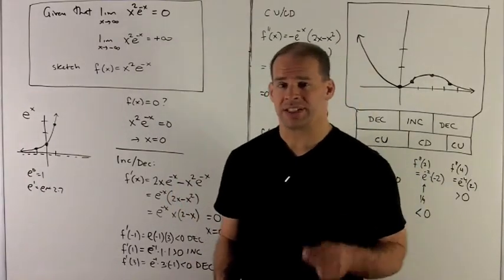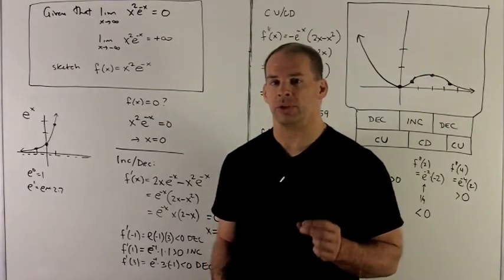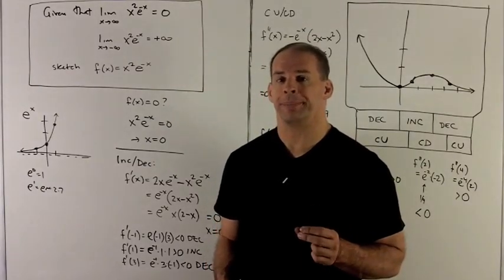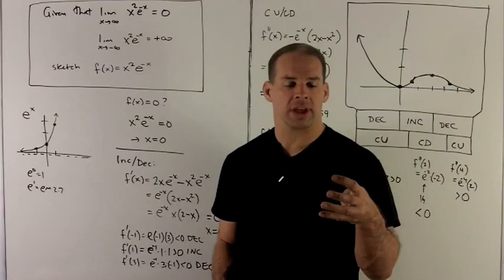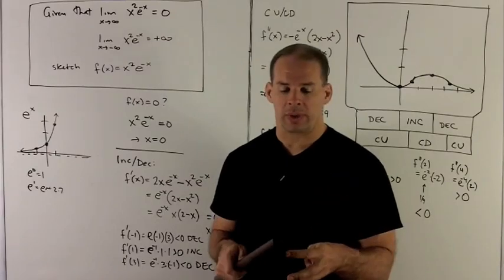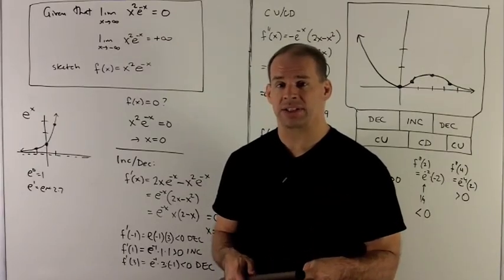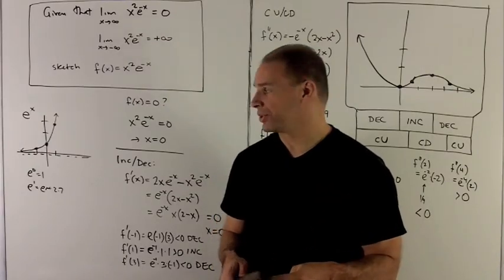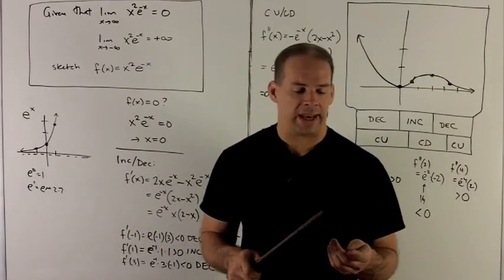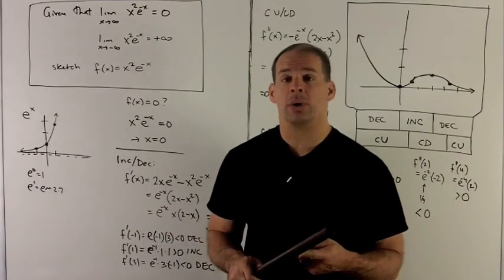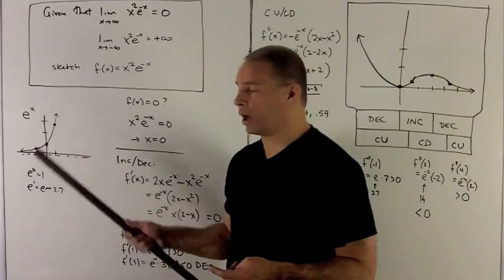First, let's sketch e^x so I can get some things I can use later on. To sketch e^x, I need four things. I need to know where the horizontal asymptote is — that's the x-axis, y = 0. I know that e^0 gives me 1, so it's going to be the point (0, 1).